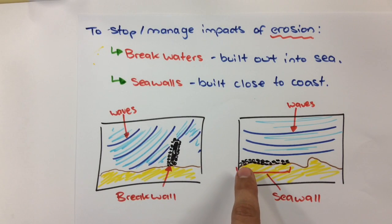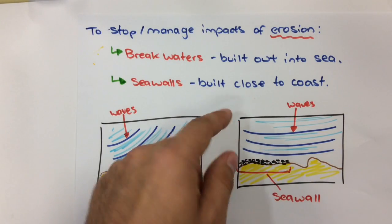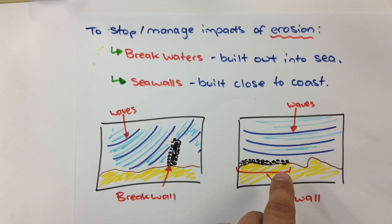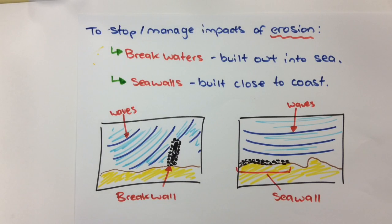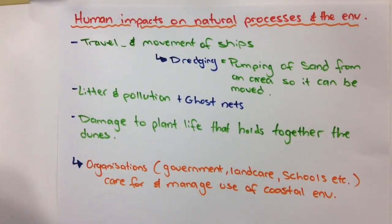A sea wall is something you can see driving along the Esplanade of Hervey Bay. They bank rocks which stop the waves, the backwash and swash, from taking sand and moving it back out to sea, stopping the erosion of the seafront. Often you'll find sea walls along the sides of roads and housing developments on coastal landscapes — they're a really effective way to stop sand being eroded.